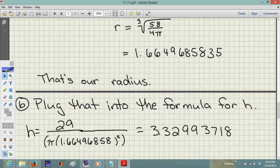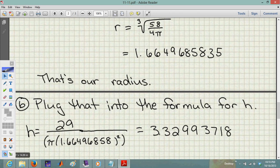Plugging that into our formula for height, h = 29/(πr²), and using the radius value, we get approximately 3.32993. Be careful with parentheses - make sure the entire denominator is in parentheses.